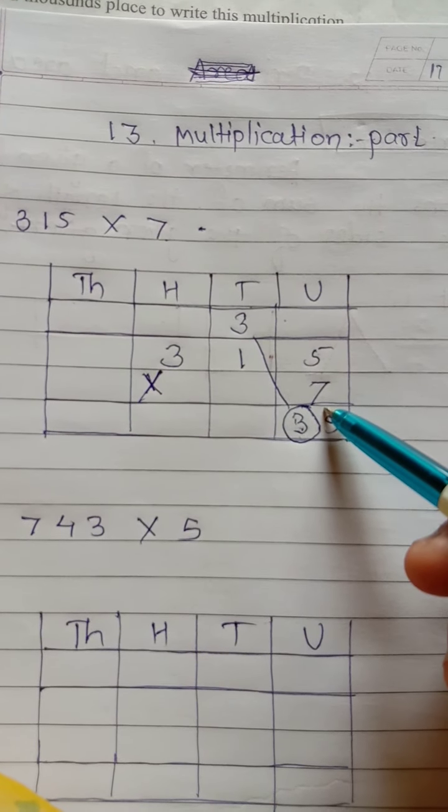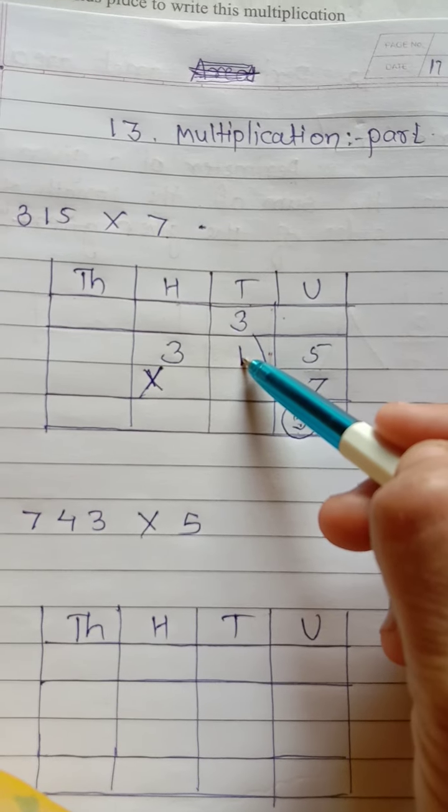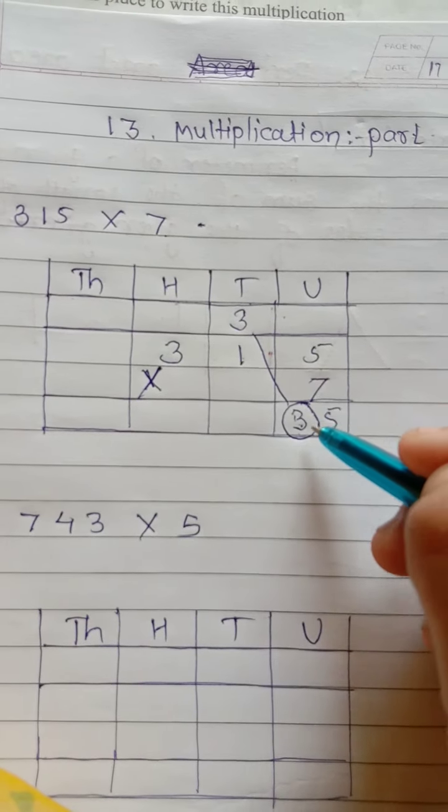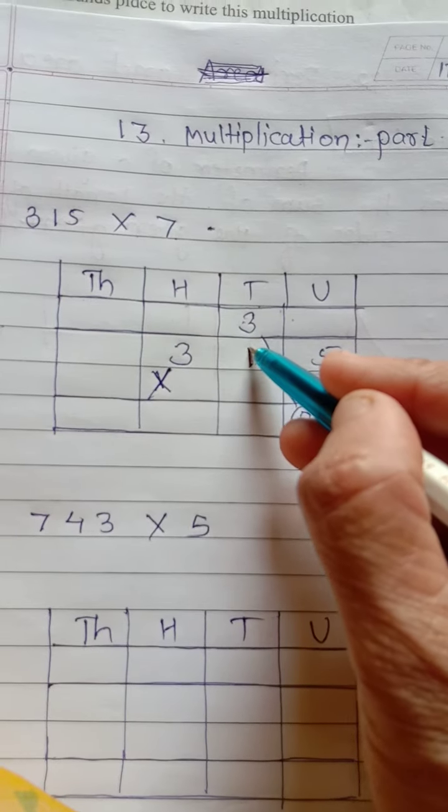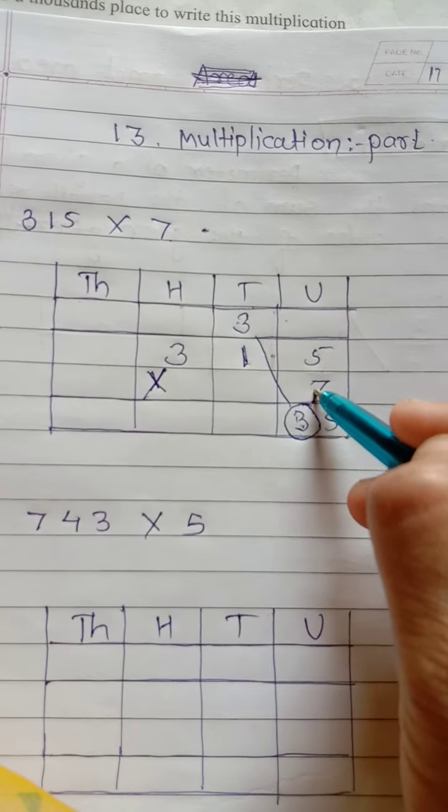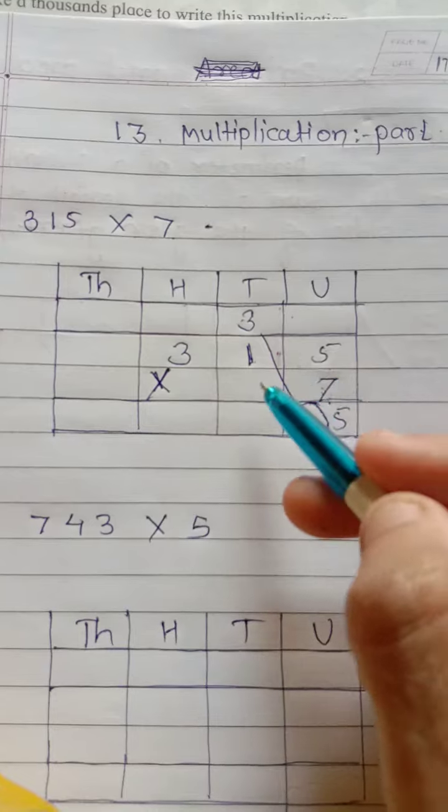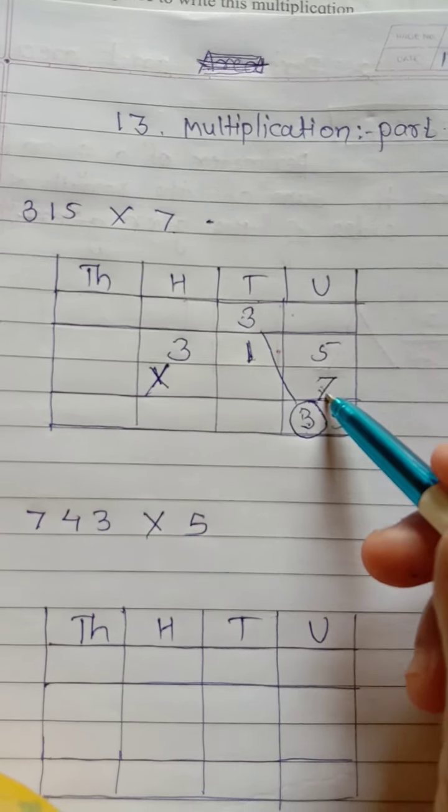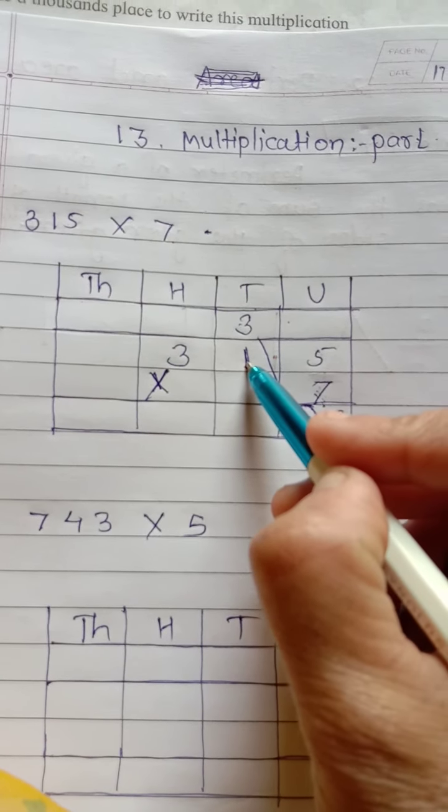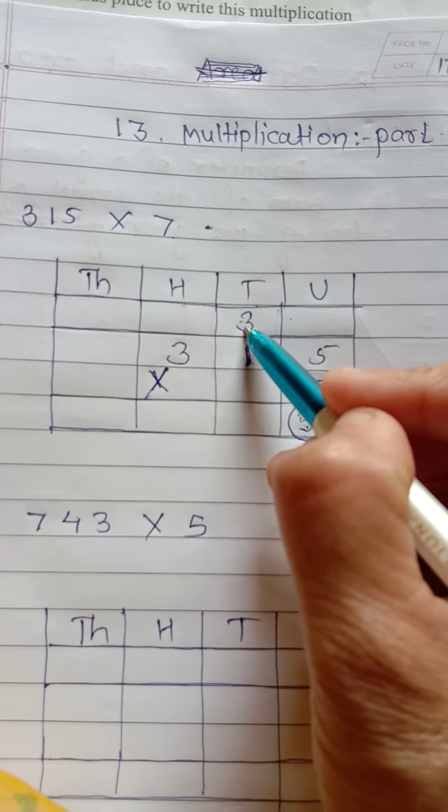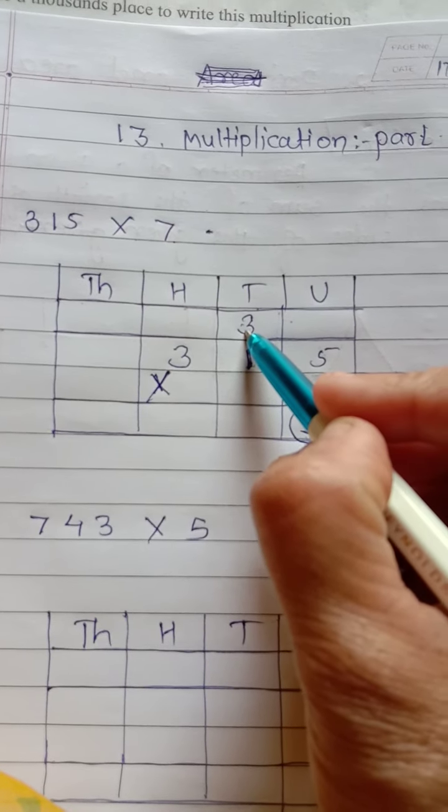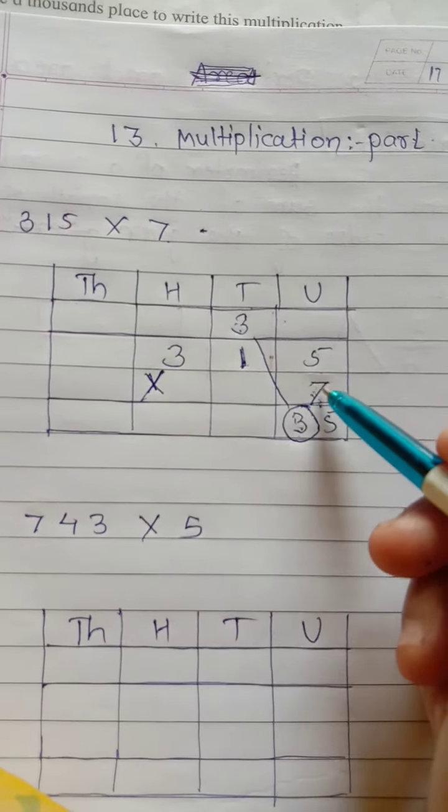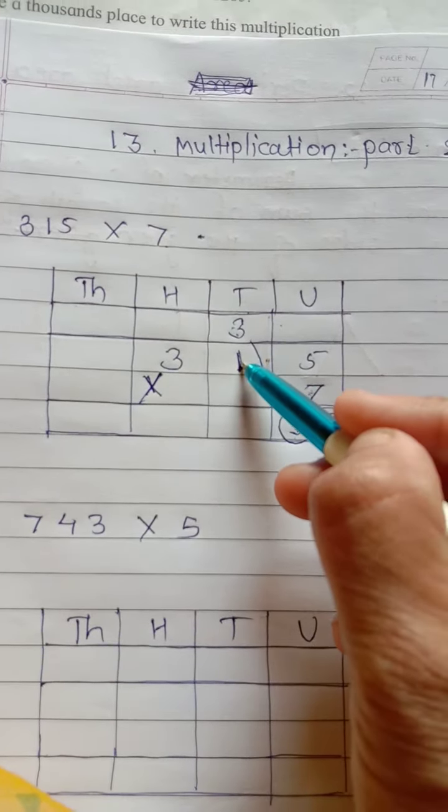Again, multiply 7 ones are 7. Again multiply this 7, 1 tens by 7 tens. Now, multiply 1 tens by 7 tens. So, 7 ones are 7 plus 3, that is, we add the 3 carried over 10s. 7 ones are 7 plus 3. 7 plus 3, 10. 10.